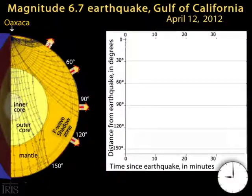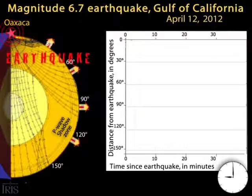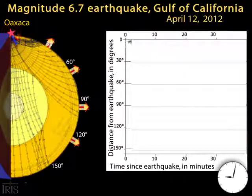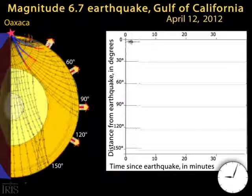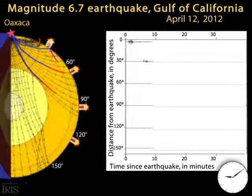After the earthquake, the initial red line shows direct P wave ray paths. The compressive P wave is recorded by each station with a vertical bump. The blue shearing S wave, following the same ray path, creates a side-to-side motion.